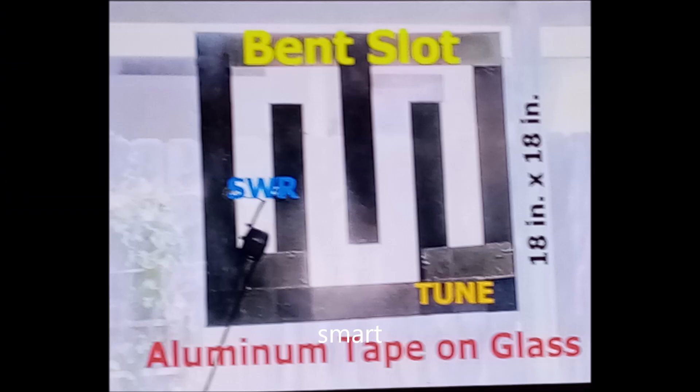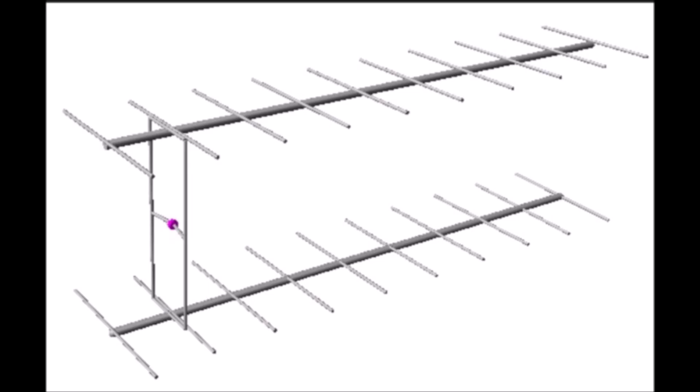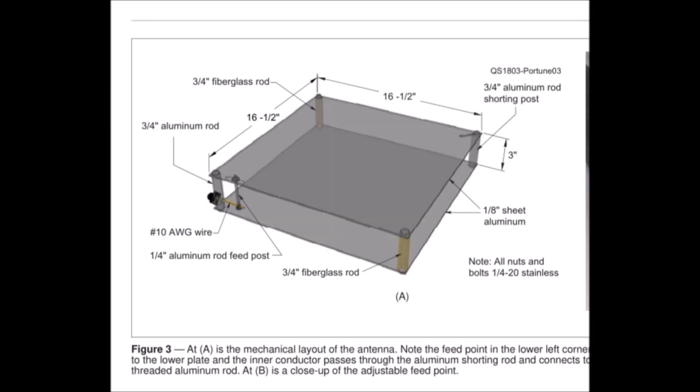It's a slot on the window glass made of aluminum tape. And this is the famous antenna. Use a slot instead of a dipole. And this is the most interesting slot.